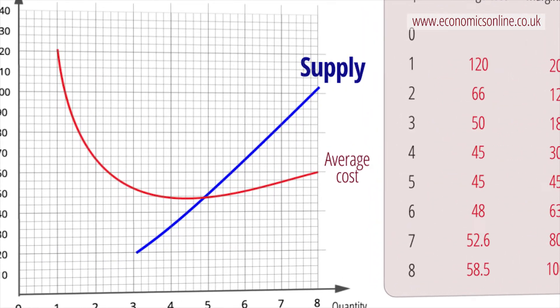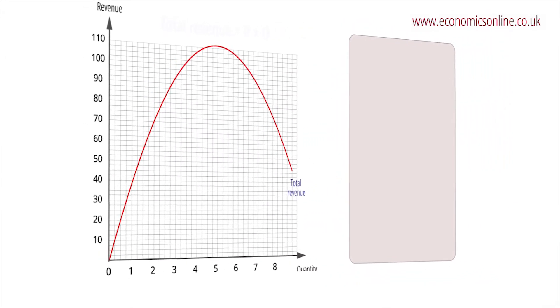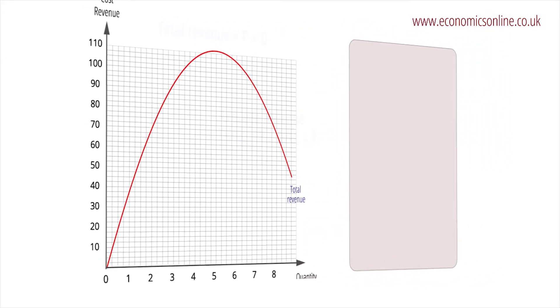Revenue provides income to pay for production costs and derive a profit. Total revenue is found by multiplying price by the quantity sold.